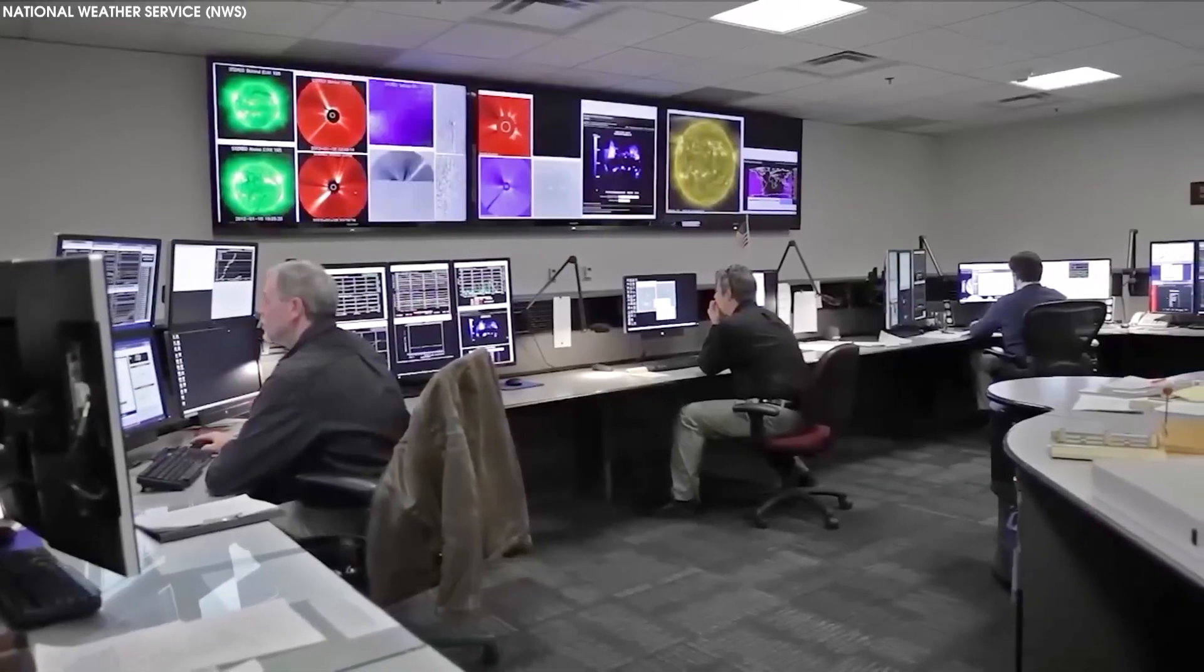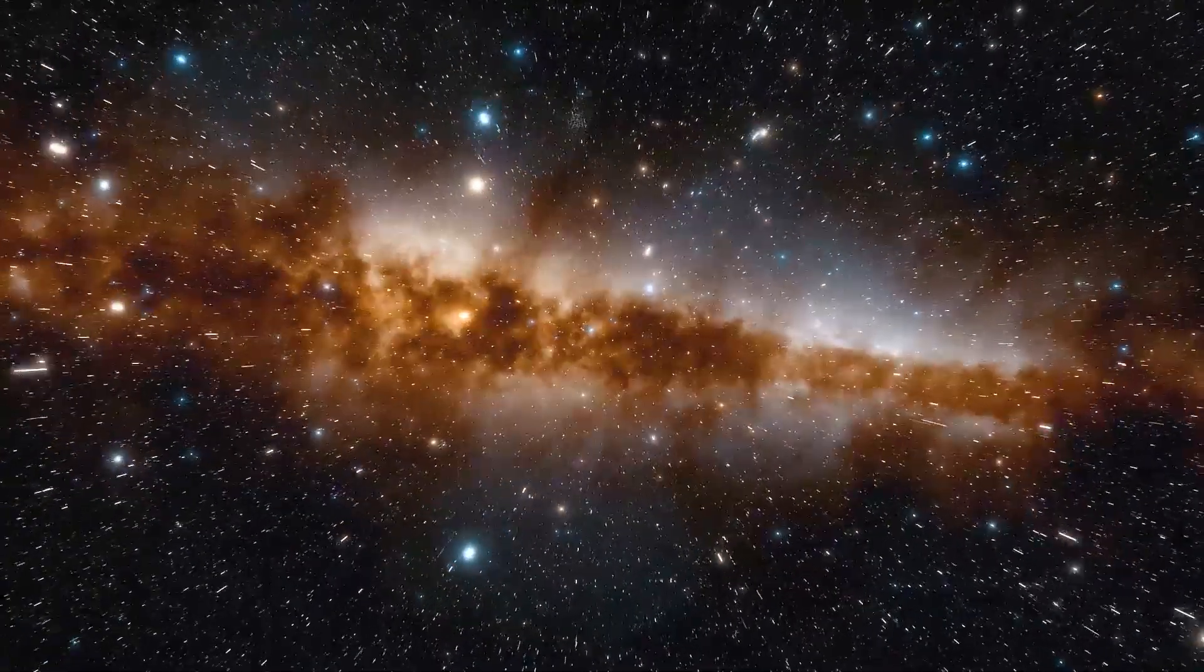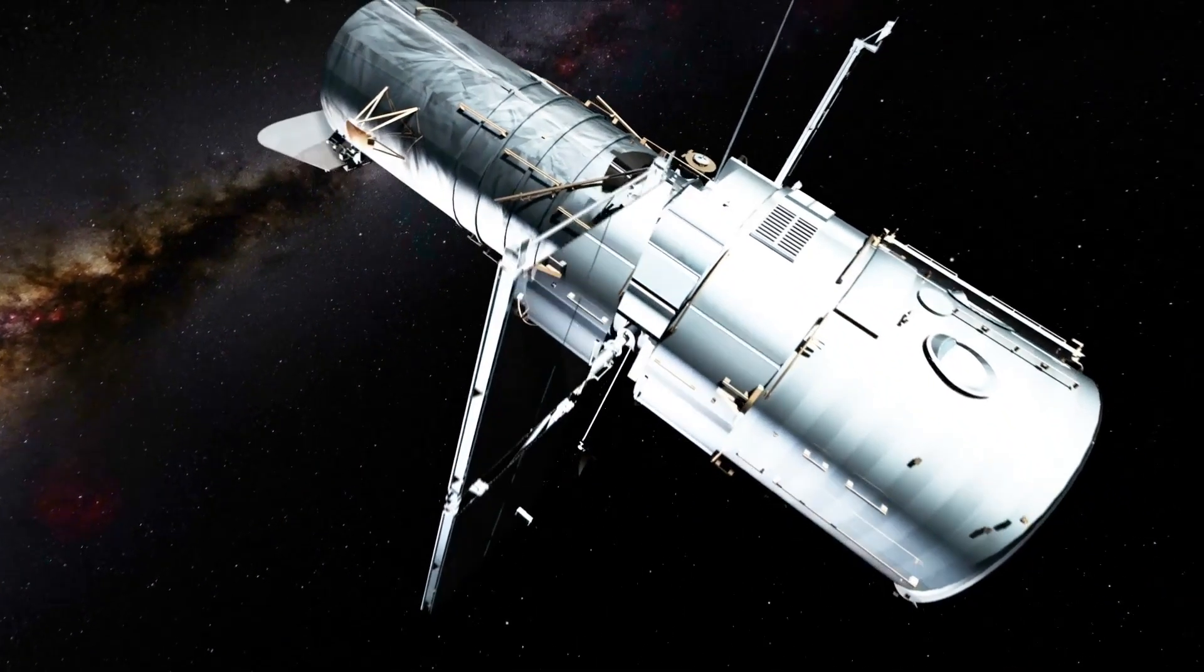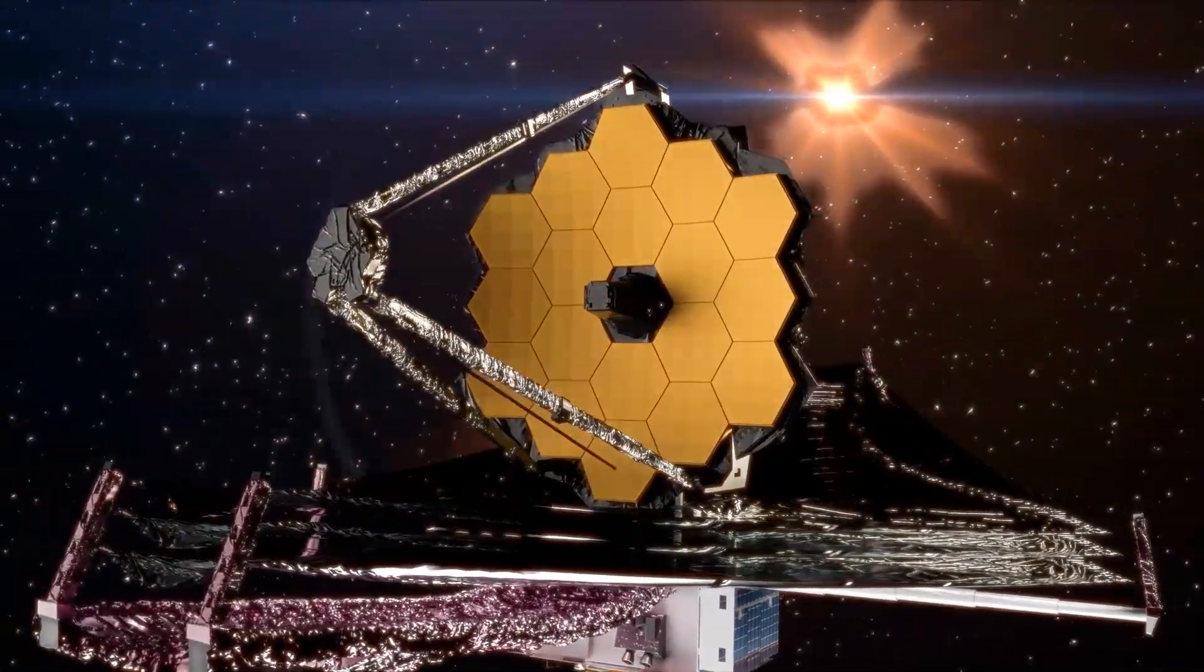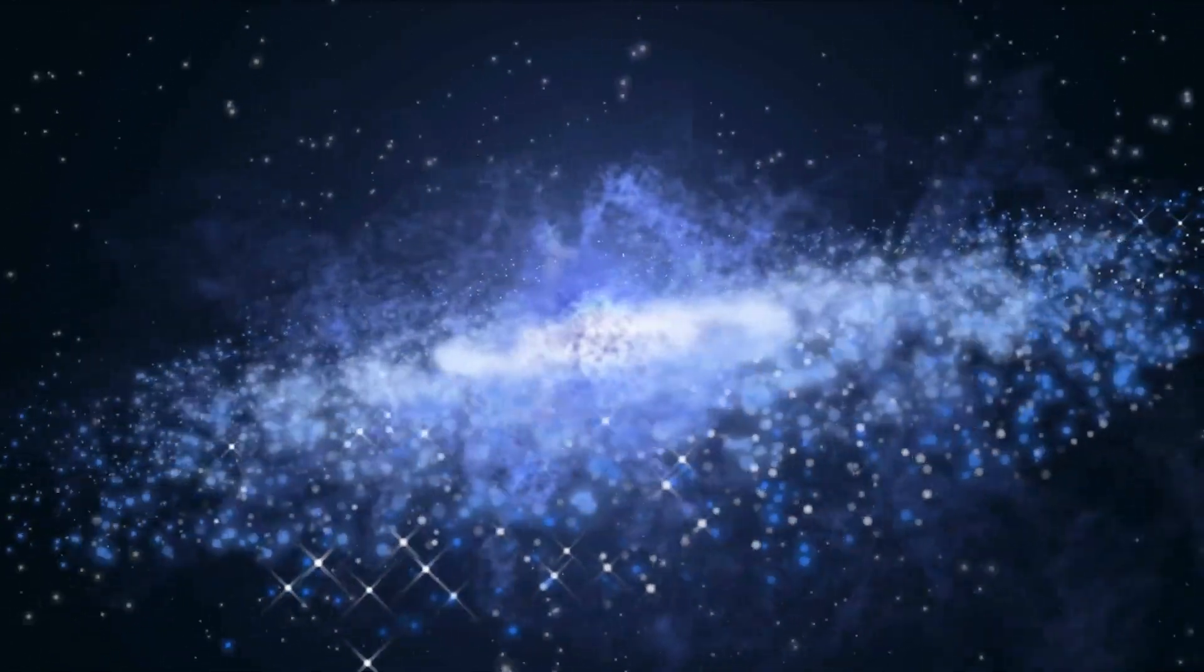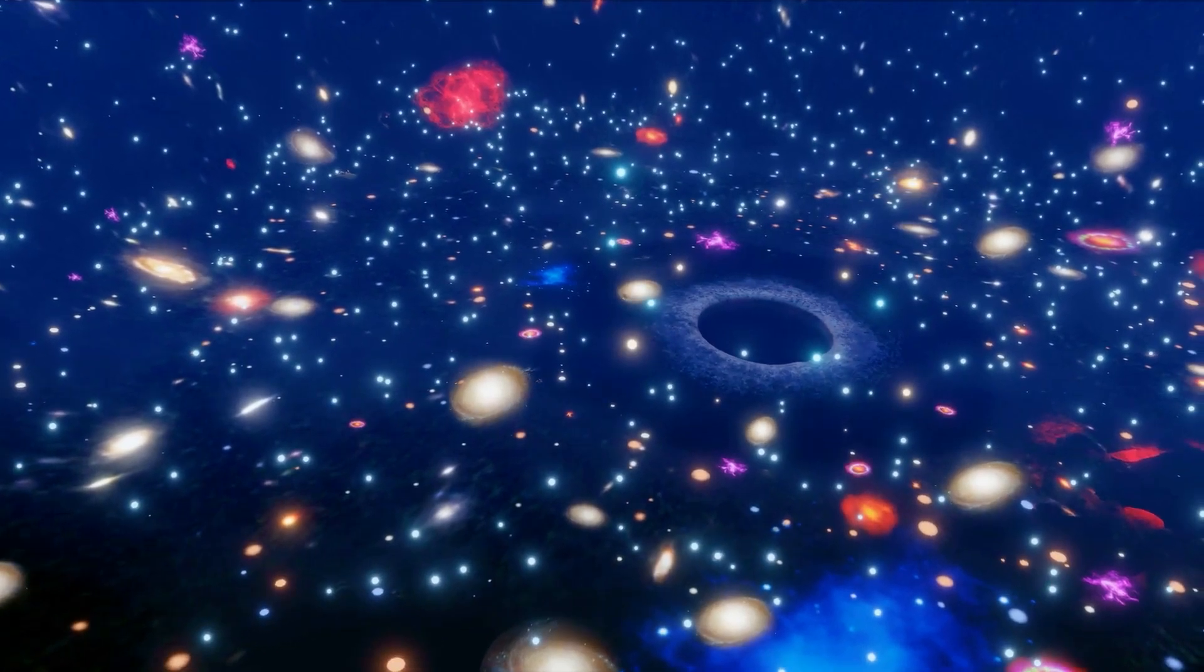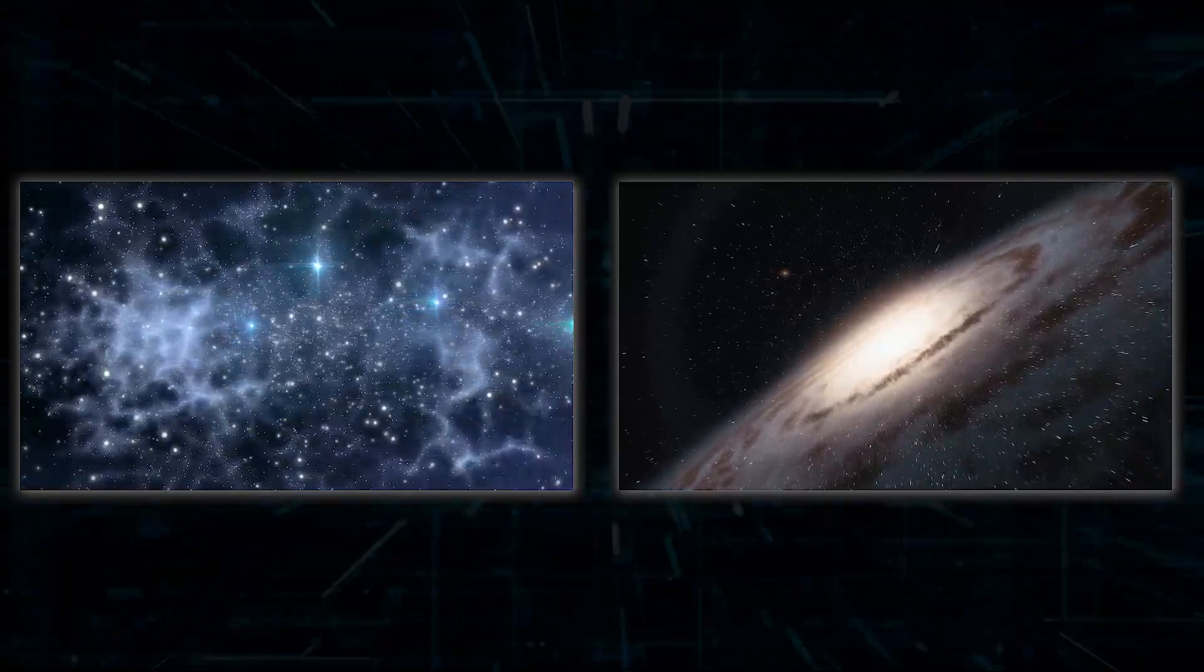Scientists believe that disk galaxies were almost non-existent until the universe was roughly 6 billion years old, until they were discovered using the Hubble Space Telescope. These fresh Webb findings move the formation date of these Milky Way-like galaxies almost to the Big Bang. This raises questions about how galaxies develop and how the early universe as a whole has changed over time, by implying that most stars form and exist within galaxies like our own.